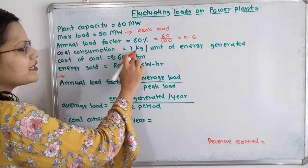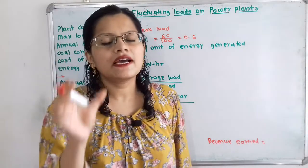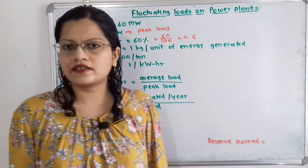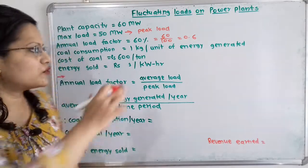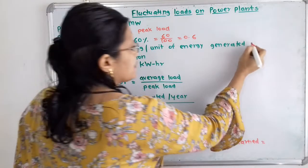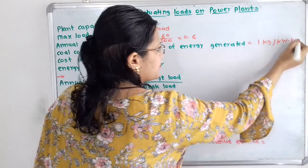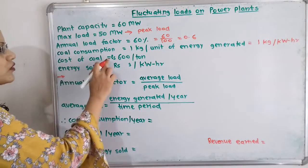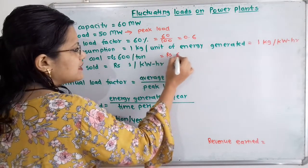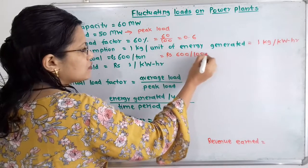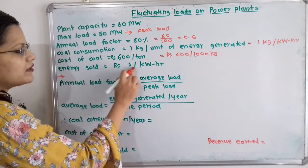Coal consumption is 1 kilogram per unit of energy generated, and this unit of energy generated is nothing but kilowatt hour. So coal consumption is equal to 1 kilogram per kilowatt hour. Cost of coal is Rs 600 per ton, that is Rs 600 per 1000 kilogram. Energy sold is Rs 1 per kilowatt hour.